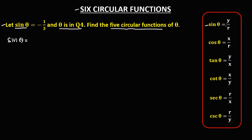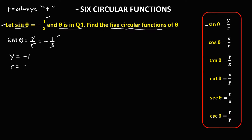Sine theta is equal to y over r, and in the given, sine theta equals negative 1 over 3. So we have the value for y and the value for r. Since r is the radius, r is always positive, so y is negative 1 and r is positive 3.